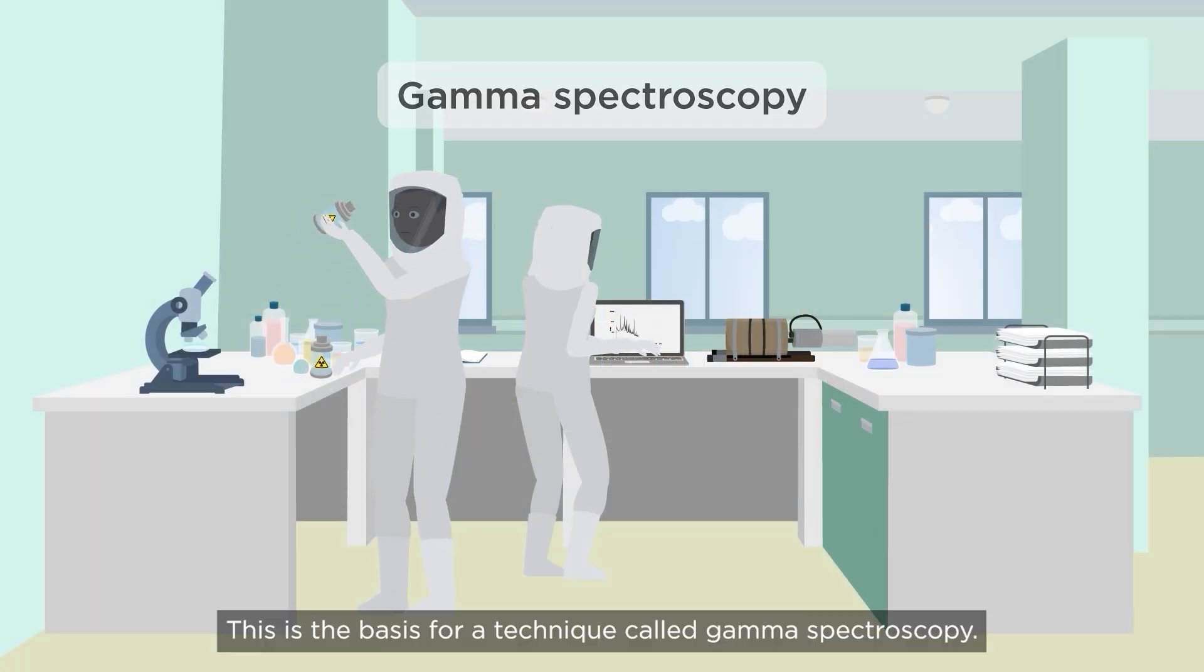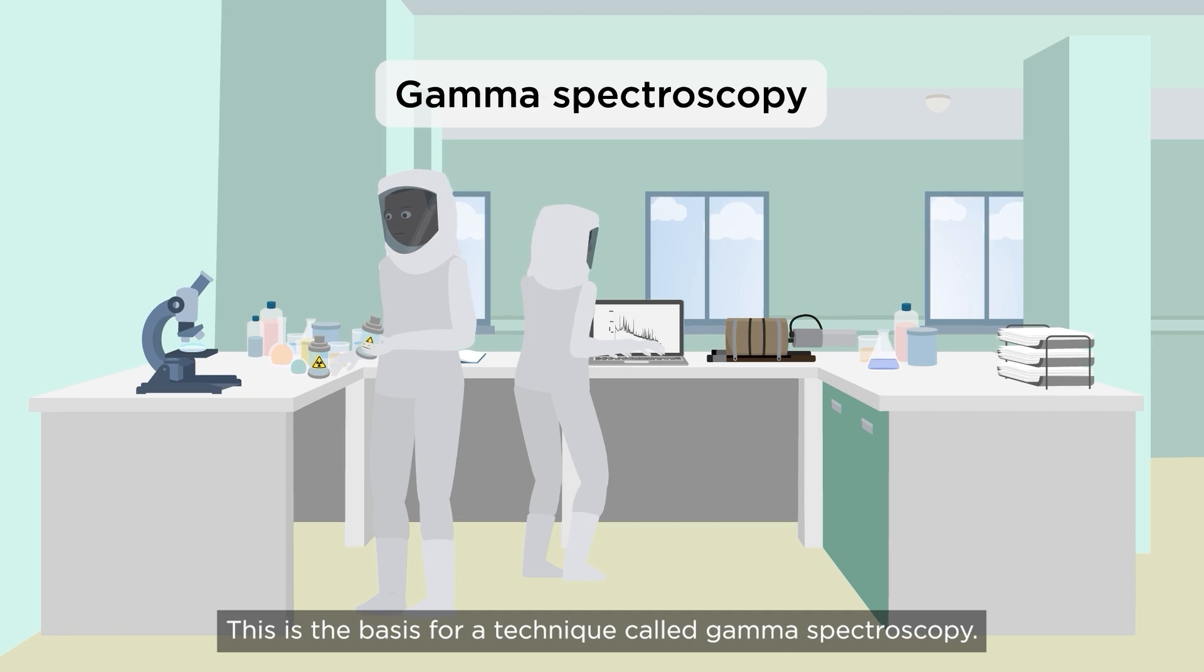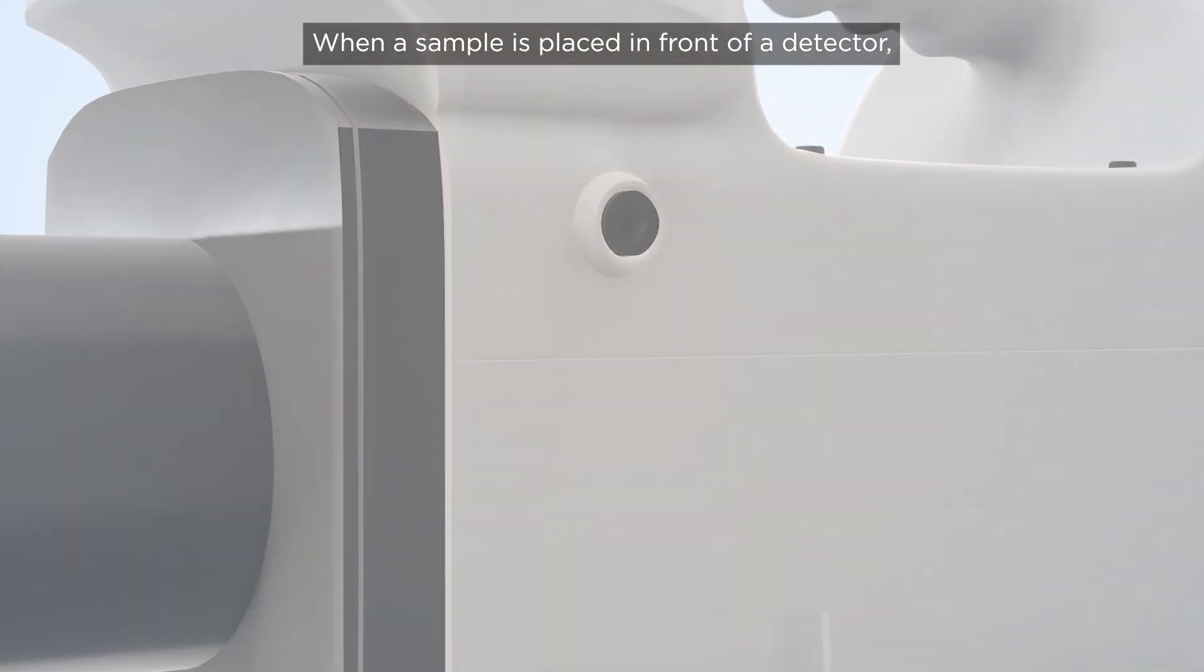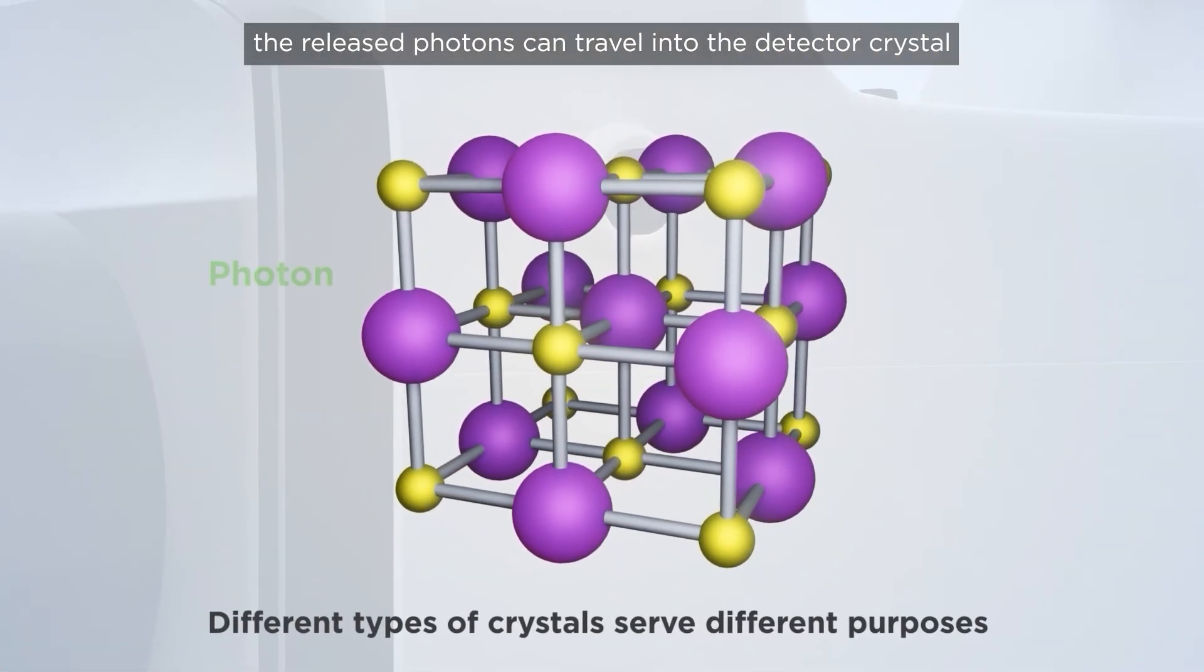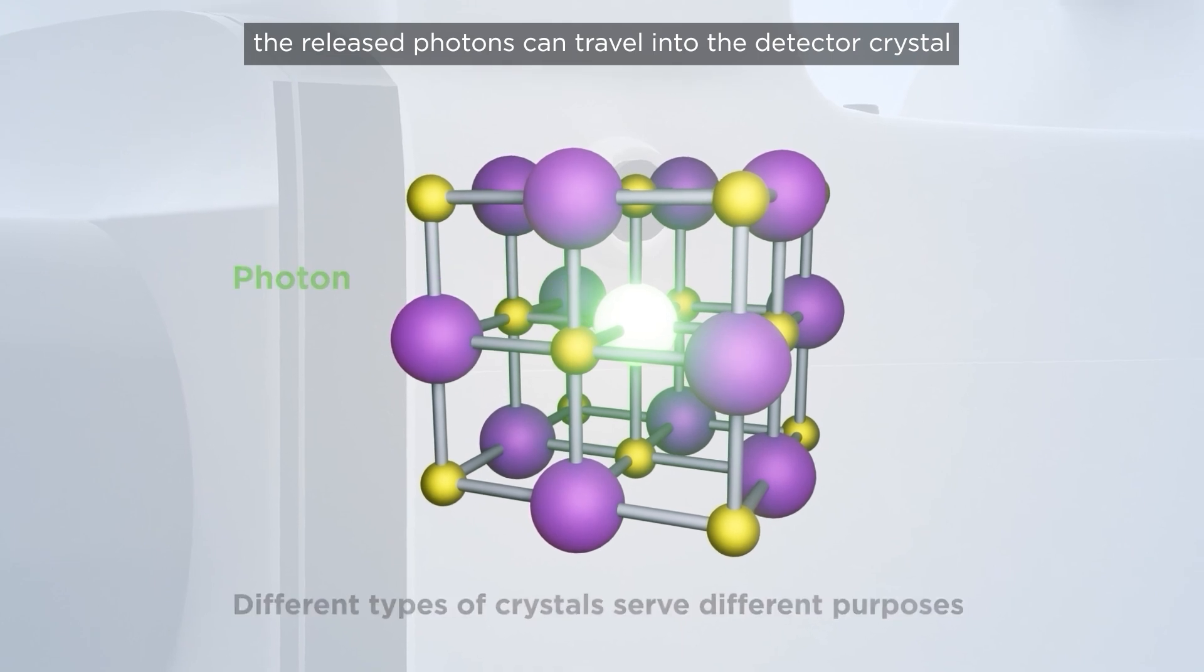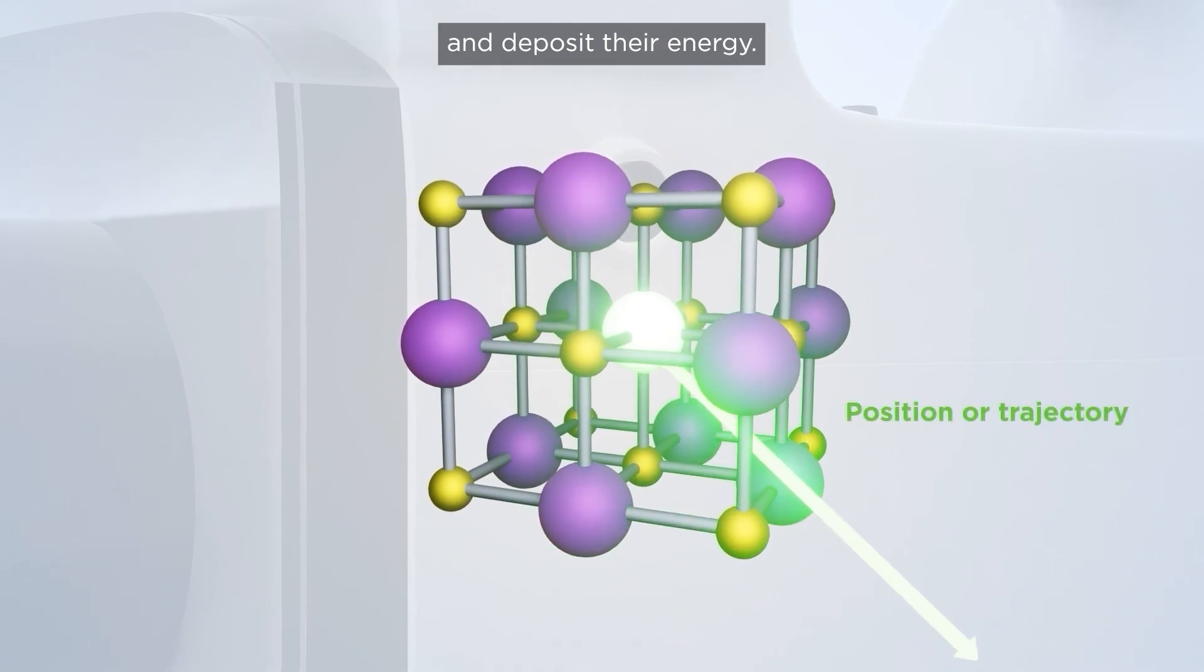This is the basis for a technique called gamma spectroscopy. When a sample is placed in front of a detector, the released photons can travel into the detector crystal and deposit their energy.